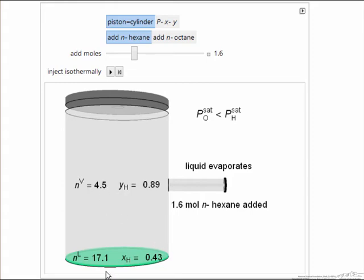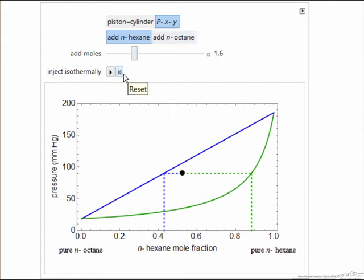And if we understand what happens, we can go and look at the PXY diagram. So let me reset. Here's where we start it, and we inject it, we move to there. You can see where we move on a diagram.